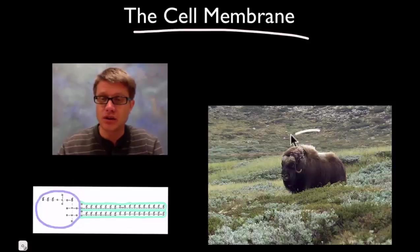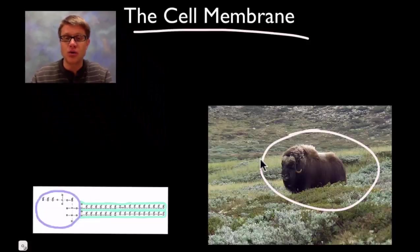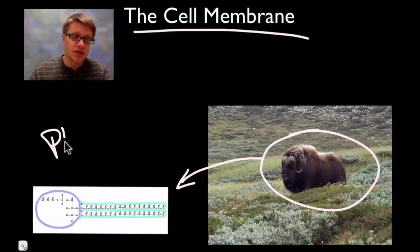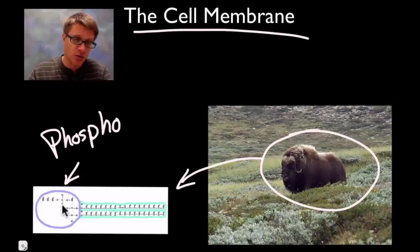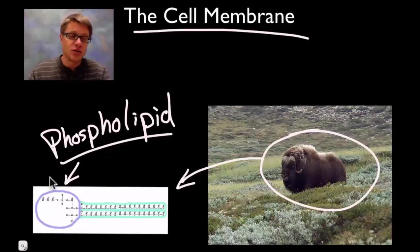You may ask yourself, why do you have a picture of a muskox here? Well, when I talk about the cell membrane I like to talk about the muskox and how it's a whole heck of a lot like this over here. This thing over here is called a phospholipid. The reason it's called phospho is because we have a phosphate group right up here in the head. The phospholipid basically has two parts to it.